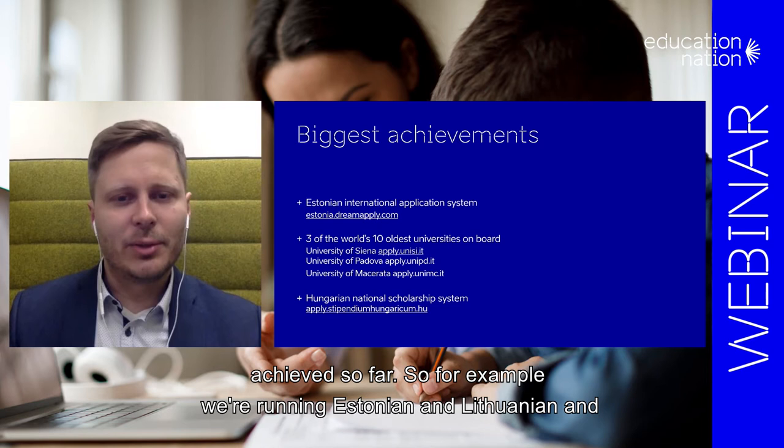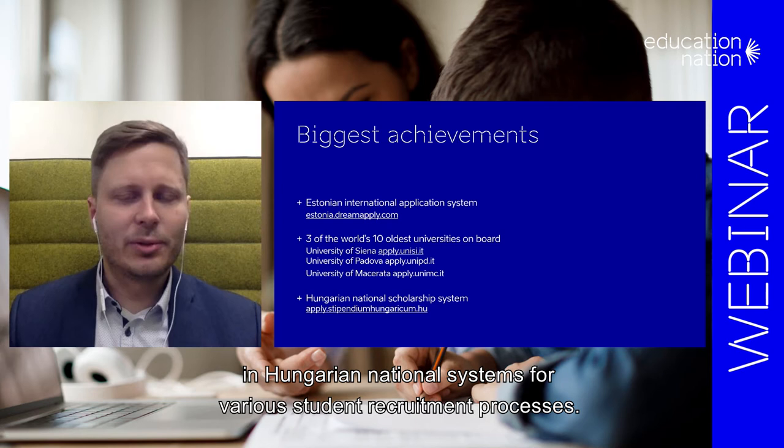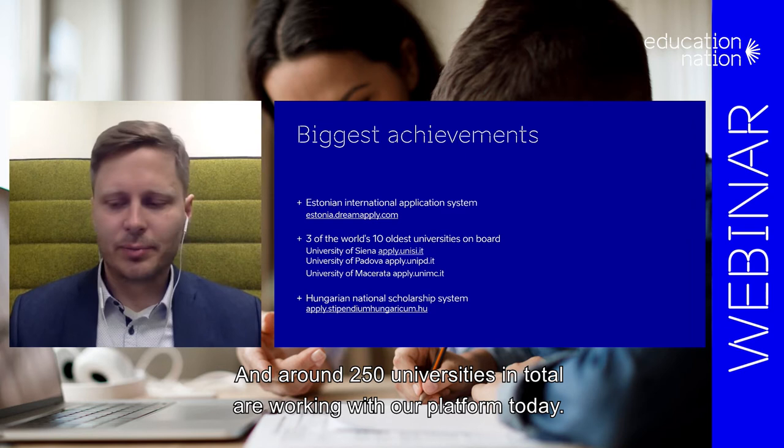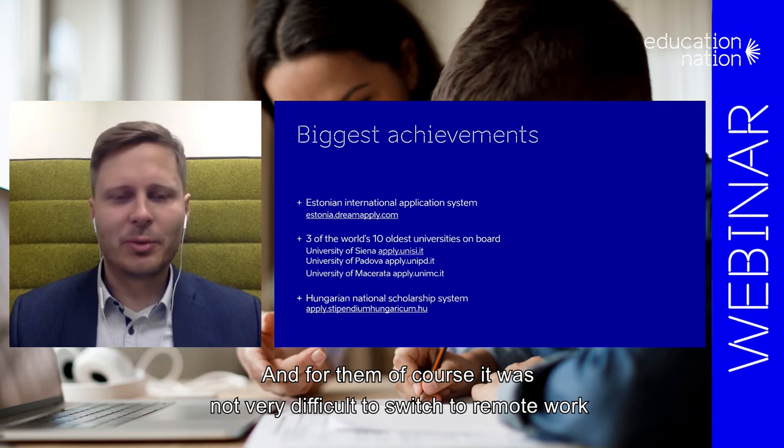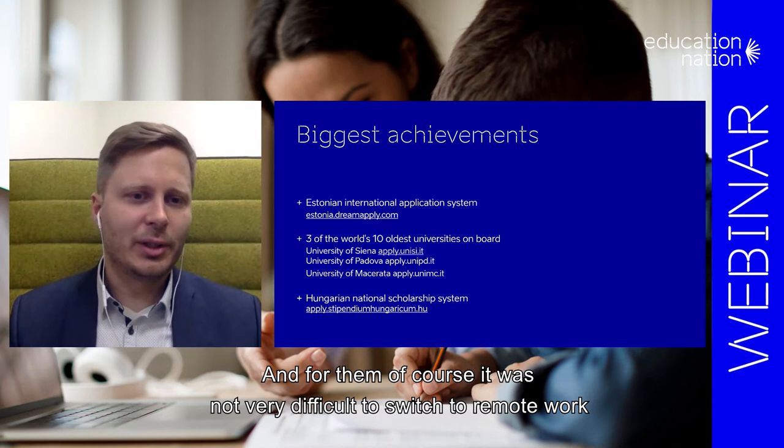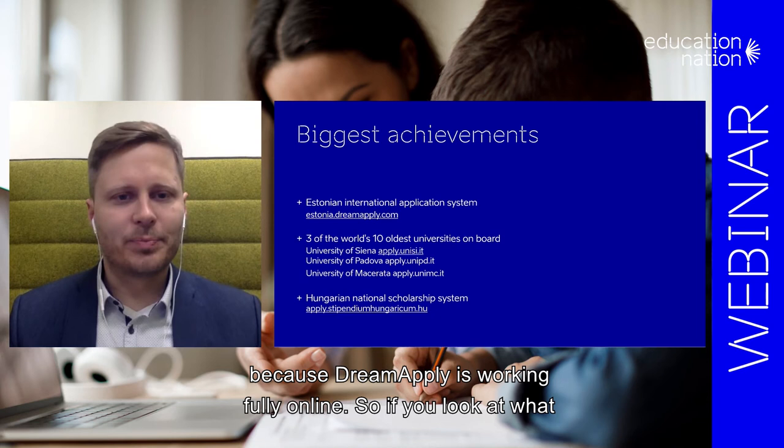For example, we are running Estonian, Lithuanian, and Hungarian national systems for various student recruitment processes. Around 250 universities in total are working with the DreamApply platform today. And for them, it was not very difficult to switch to remote work because DreamApply is working fully online.